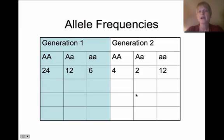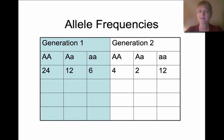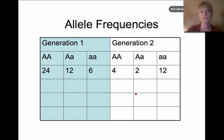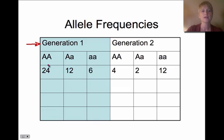So how do we know that evolution has occurred? We look at allele frequencies, which involves a bit of math. We can determine whether evolution happened by comparing allele frequencies from generation one to generation two.